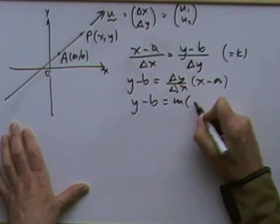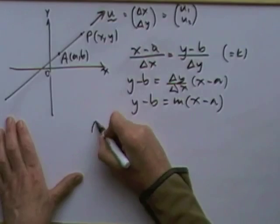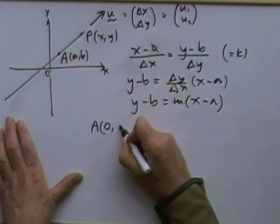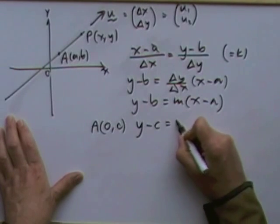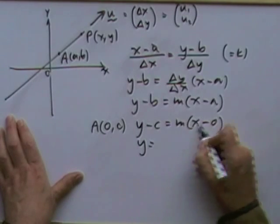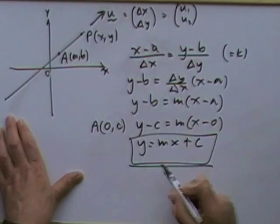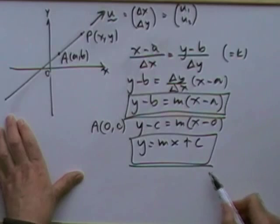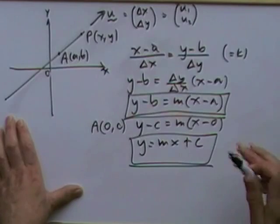You end up with that familiar form of the equation of a line. If you choose point A as the point on the y-axis — commonly called c — you get y minus c equals m(x minus 0), which simplifies to y equals mx plus c. You'd use the first form if you know the gradient and a point; the second if you know the gradient and the y-intercept.